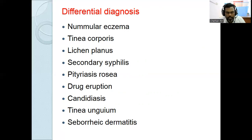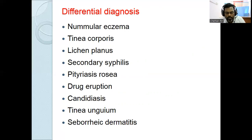Lichen planus is an autoinflammatory papulosquamous disorder of unknown etiology. It presents with extremely pruritic polygonal flat-topped papules and plaques mainly over the flexural aspect, and can be associated with oral mucosal lesions. Oral LP patterns include reticular, papular, plaque, bullous, atrophic, and erosive types. Hypertrophic lichen planus in skin and erosive lichen planus in oral mucosa can predispose to squamous cell carcinoma.